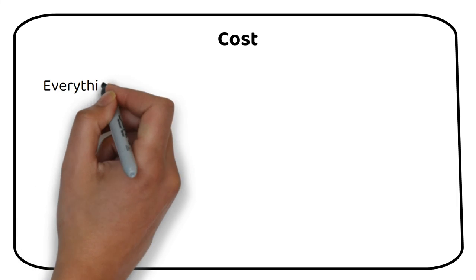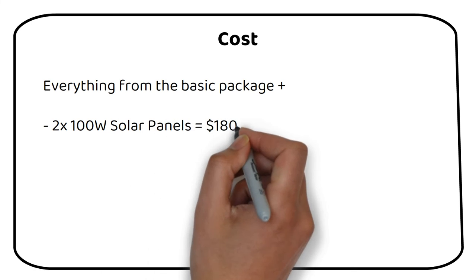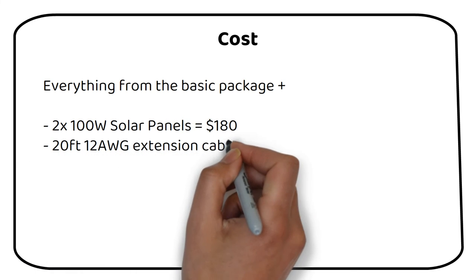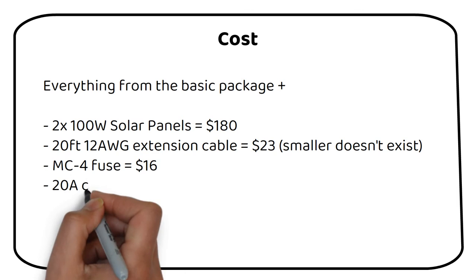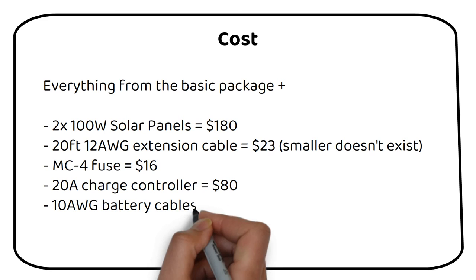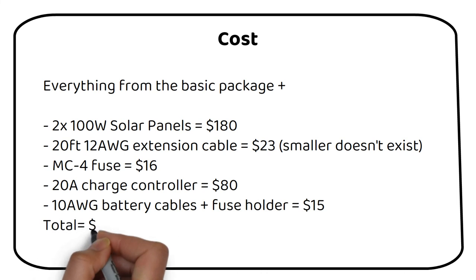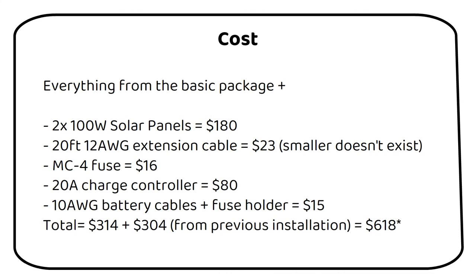The total cost for the system is everything from the previous video, plus the extra components we have added to this system. These are two solar panels for a total of 180 dollars, 20 feet solar extension cable for 23 dollars, an inline MC4 fuse for 16 dollars, a 20 amp charge controller for 80 dollars, 10 gauge battery cables with a fuse holder for 15 dollars. In total we have 314 dollars plus 304 dollars for the previous installation. The total cost for the system is 622 dollars. The links to these parts will be included in the description.